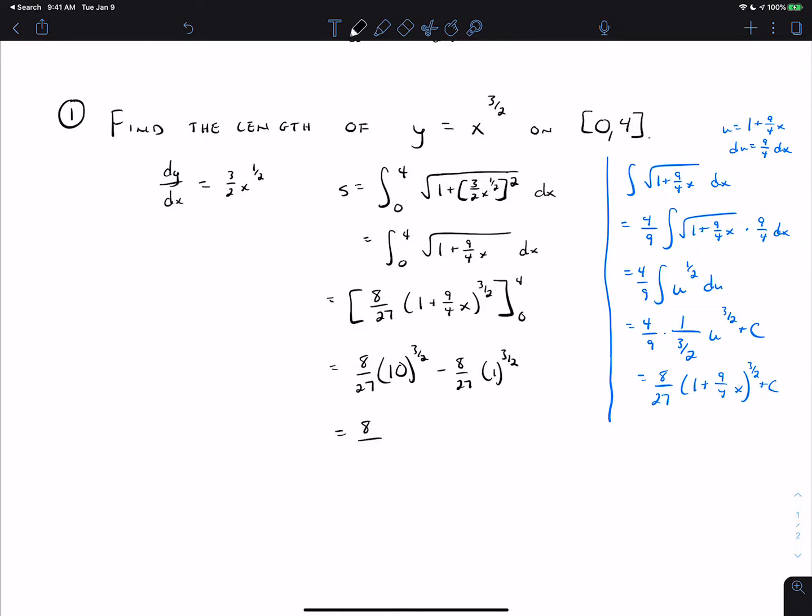I'm going to choose not to simplify 10 to the 3 halves. That would be the square root of 10 to the 3 power, so we'll just leave that. So 8 over 27 times 10 to the 3 halves. But then 1 to the 3 halves is 1. We'll leave the answer like this.